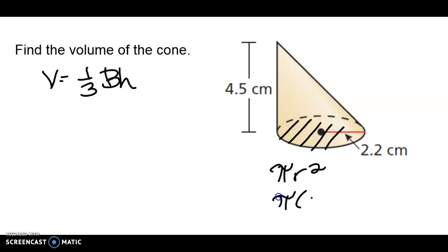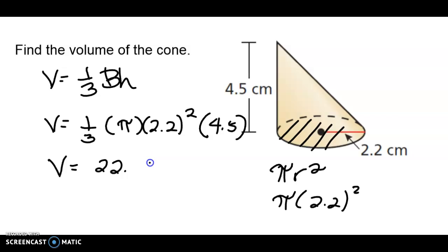So if you substitute the radius and square it, we're going to have here one third. The base area is π times 2.2 to the second power, and then the height of the cone is 4.5 centimeters. So let's do that in our calculator and round the answer off to the nearest tenths. So if you square 2.2 and then multiply it to 3.14 and multiply it by 4.5 and then all together divide by 3, correct me if I'm wrong, but my answer to the nearest tenths is 22.8 cubic centimeters.